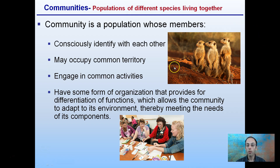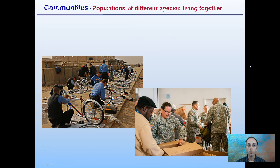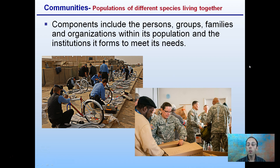For example, meerkats can have a lookout — we see a local community engaging in activities, with interaction between different species. Within these communities, components include the persons, groups, or families, and the organizations and institutions it forms to meet its needs. We see people coming together as a community to build bikes, or coming together to distribute food or water during a time of crisis. These are each communities, but they are defined slightly differently.